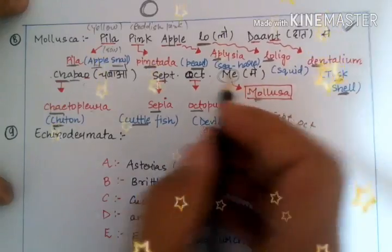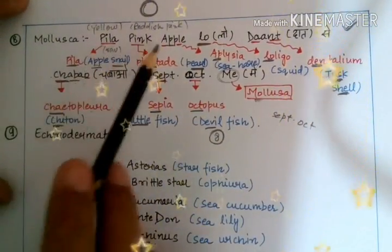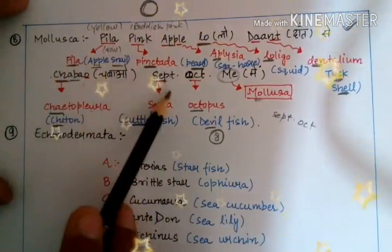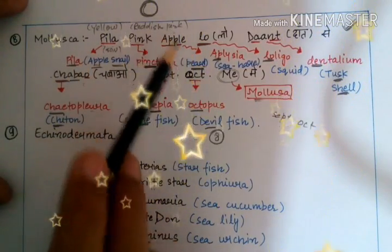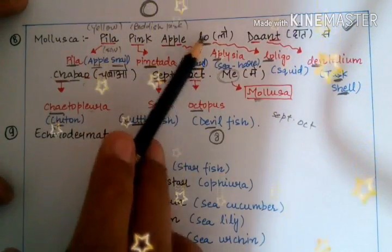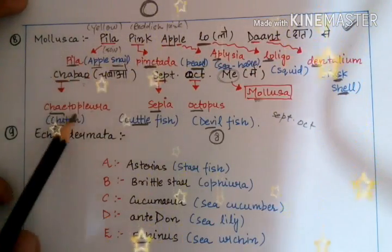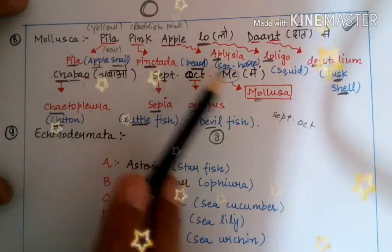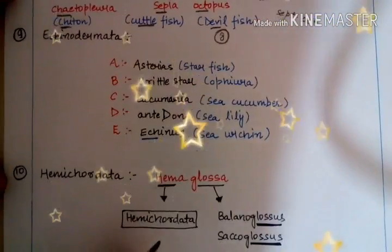Sepia is known as cuttlefish, and May — the last word — simply means Mollusca, the phylum we are talking about. So to summarize: 'Pila pink apple lo, daato se chabao, September October May' means Pila, Pinctada, Aplysia, Loligo, Dentalium, Chiton, Sepia, Octopus — all organisms of Mollusca.